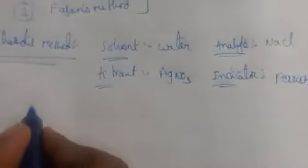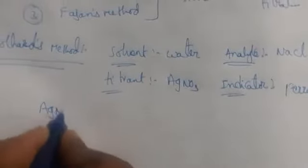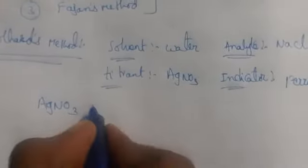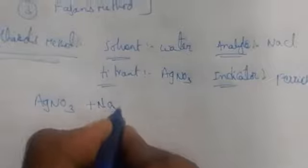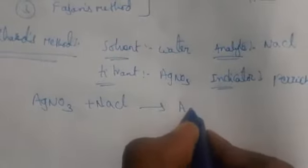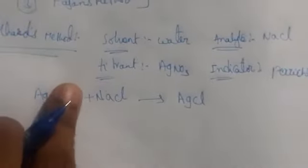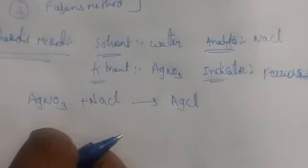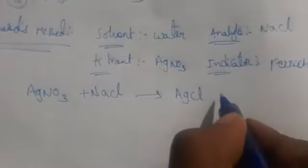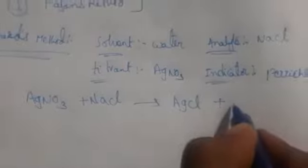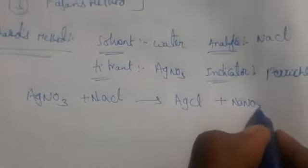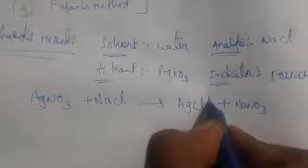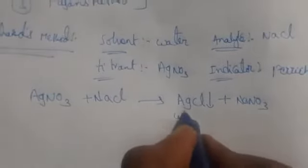So generally what happens in the first step: when you react AgNO₃ with NaCl, it forms AgCl. So in the burette you are taking AgNO₃ and in the conical flask you are taking NaCl. Whenever the titration happens it is going to form AgCl and NaNO₃ as a byproduct. This AgCl forms as a white precipitate.